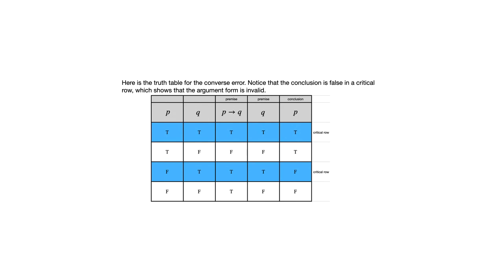Here's the one for the converse error and there are two critical rows. In one of them, the conclusion is true, but for a valid argument, you must have a true conclusion in every critical row. So this is not a valid argument form.